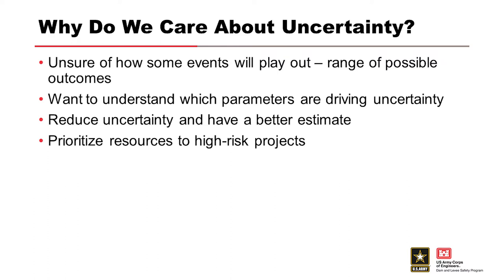Since we are unsure of what exactly will happen, we want to have an idea of the range of possibilities. We want to understand the outcomes if one possibility occurs as opposed to another. If we can determine that a certain parameter is impacting our consequences, then we have a better chance of taking action to reduce the uncertainty, get a better estimate of results, and better prioritize resources and funding for high-risk projects.